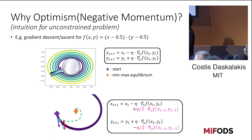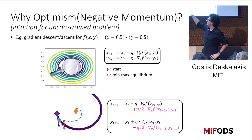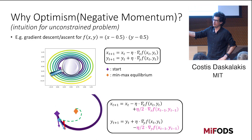The weights eta and eta/2 — the ratio of 2 comes from deriving this method from FTRL. You upweight the previous action by a factor of 2. The ratio has to be exactly 2 based on the FTRL derivation.